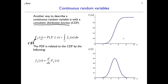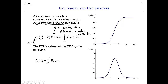The CDF definition also holds for discrete random variables — I can find the probability that a discrete random variable is less than or equal to some number as well. However, the integration and differentiation operations don't apply to discrete random variables; summation operations are used instead. But the definition of a CDF works regardless of whether we have a continuous or discrete random variable.